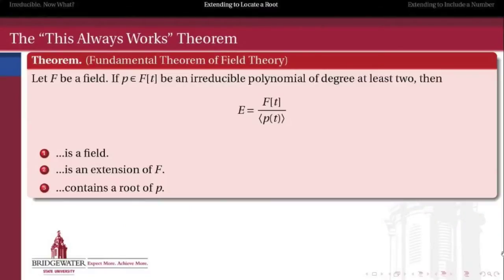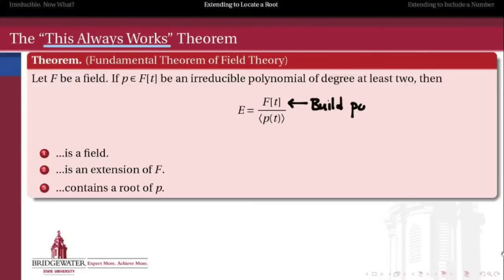So first is the this-always-works theorem for the quotient construction from the previous video. It says: if f is a field and p is an irreducible polynomial over f that's at least quadratic, then if I take the polynomial ring f adjoin t and take the quotient by the principal ideal generated by p — our irreducible polynomial — then the result is always going to be a field.